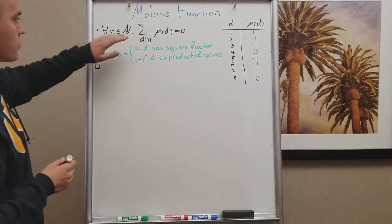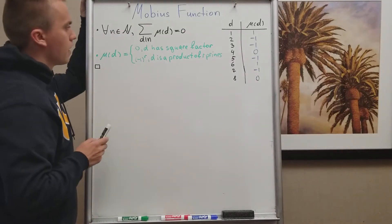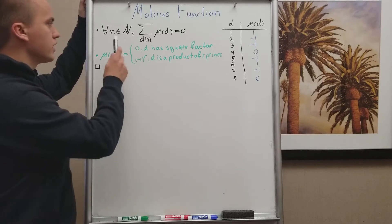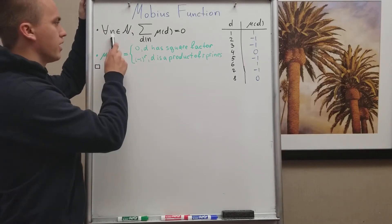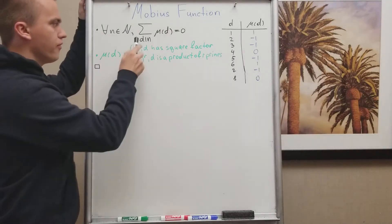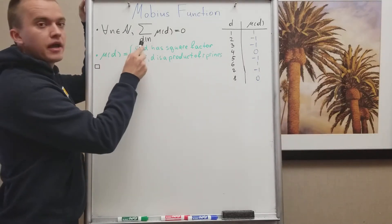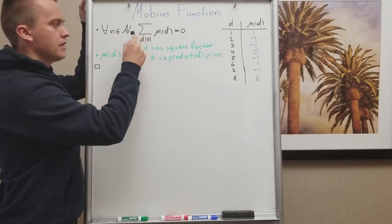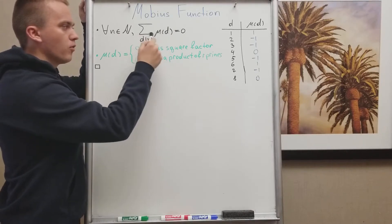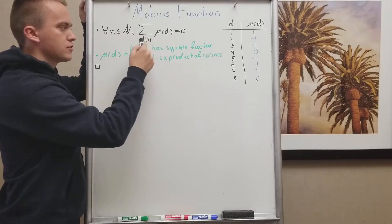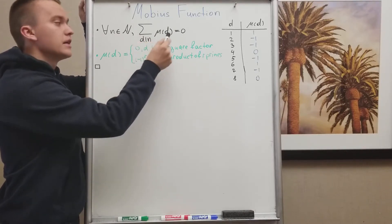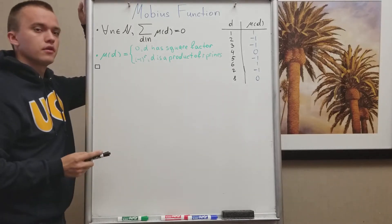For this property I want to show: if we take any natural number n and consider all divisors d of n, and sum up the Möbius function over all those divisors, then the sum equals 0.